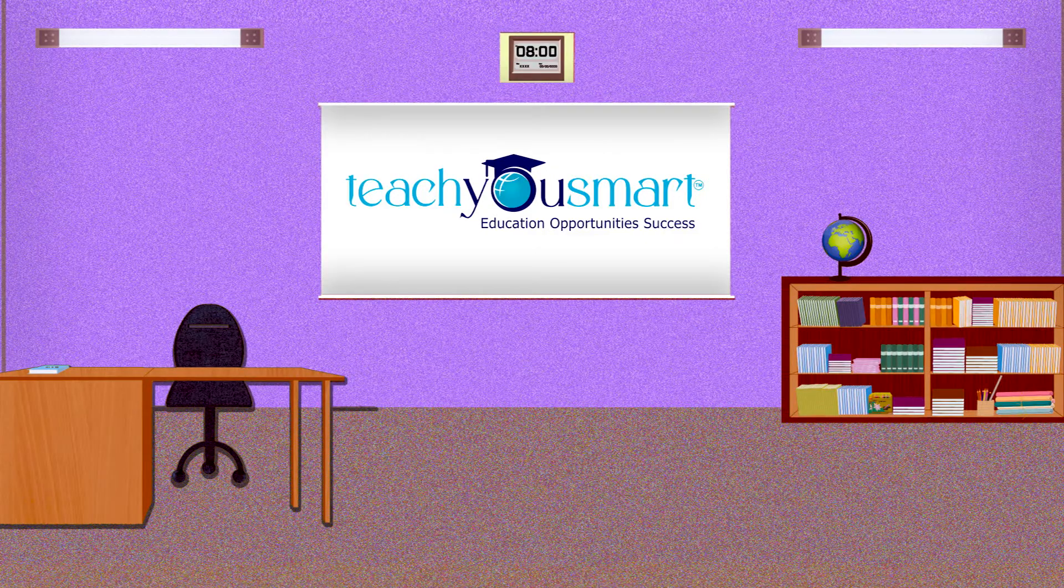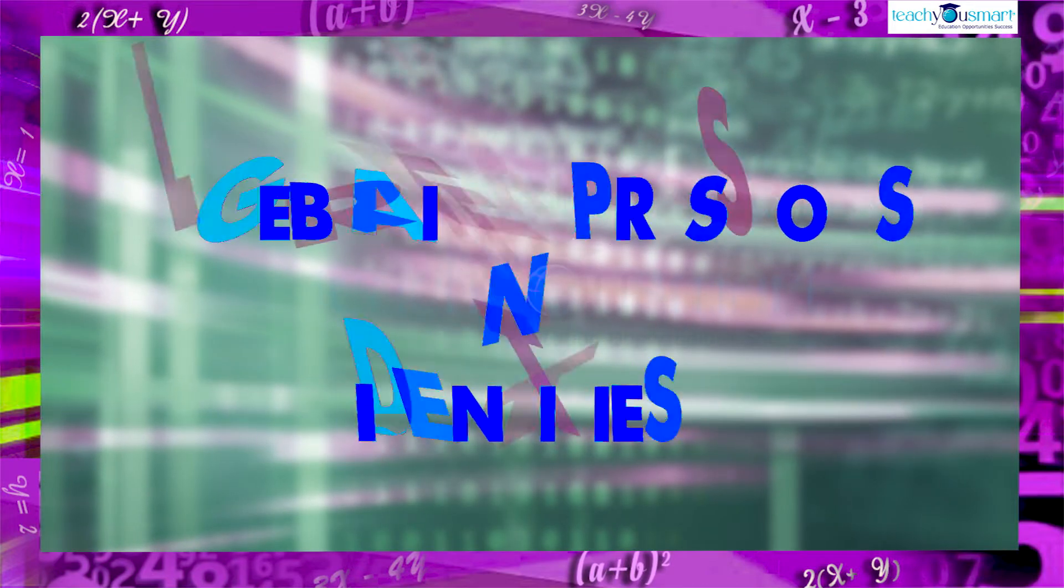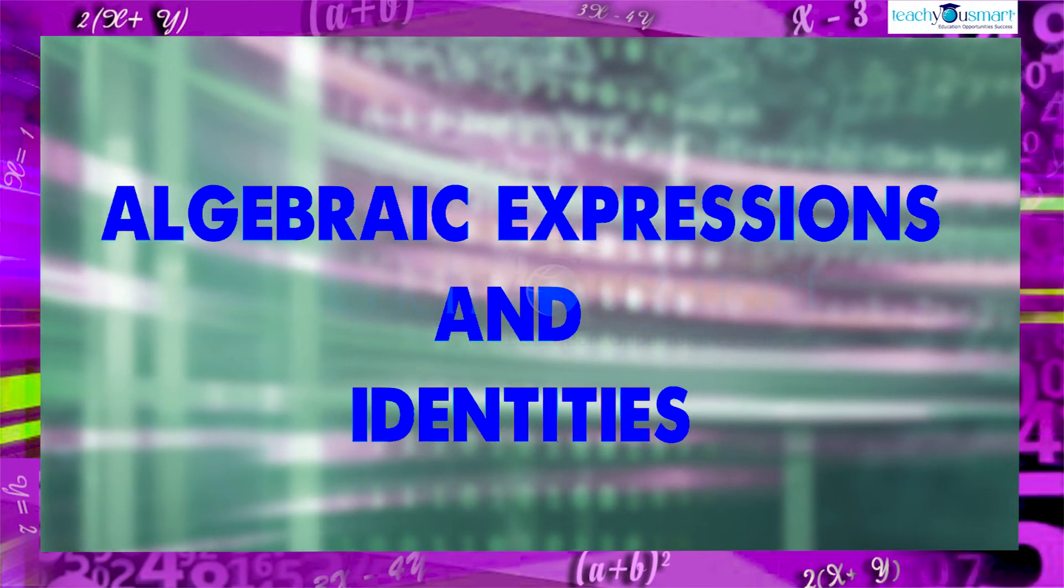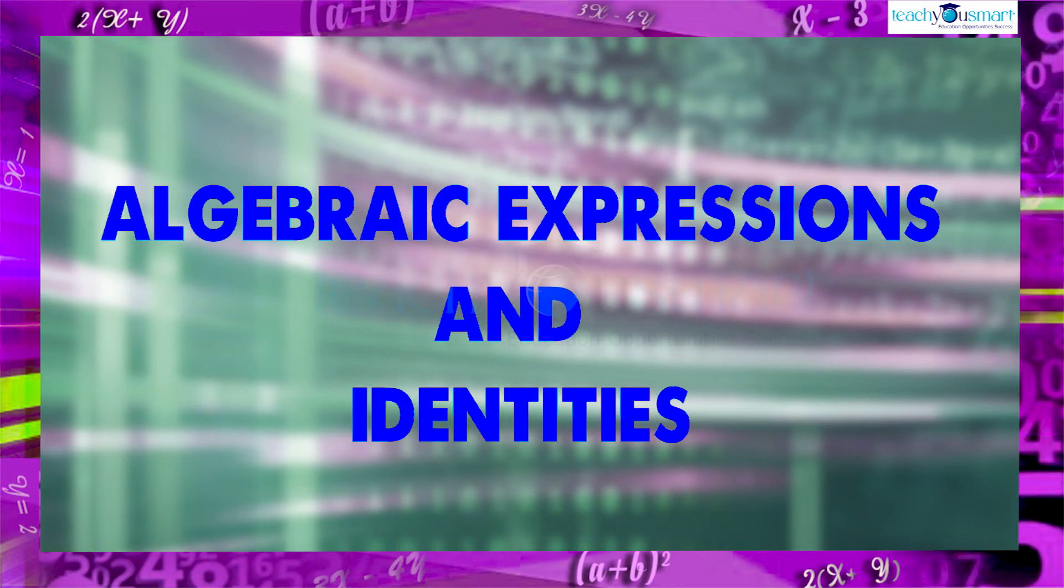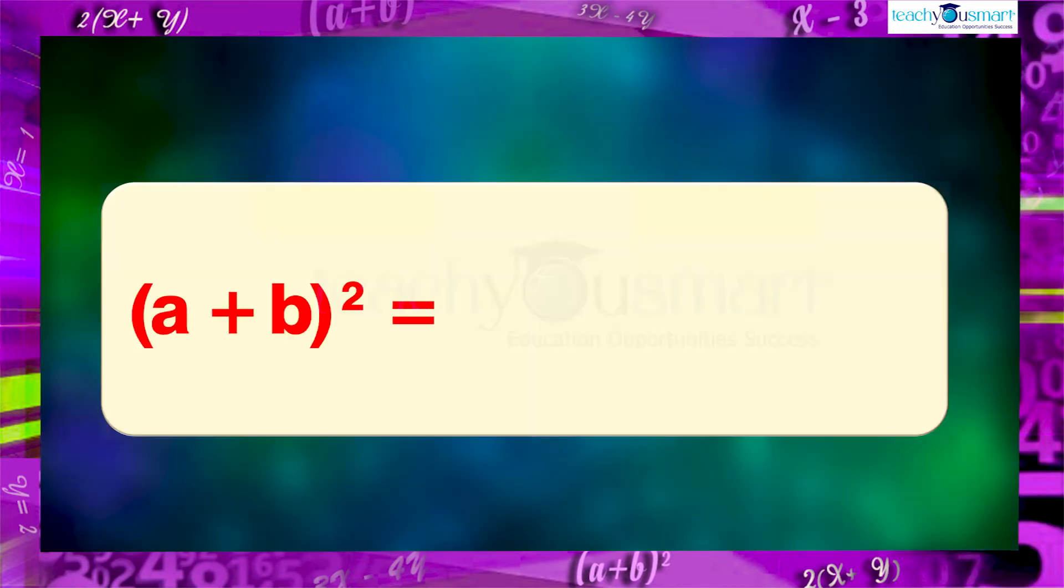Hello students, let's continue our journey through algebraic expressions and identities. Today we are going to explain the identity (a+b)² = a² + 2ab + b².